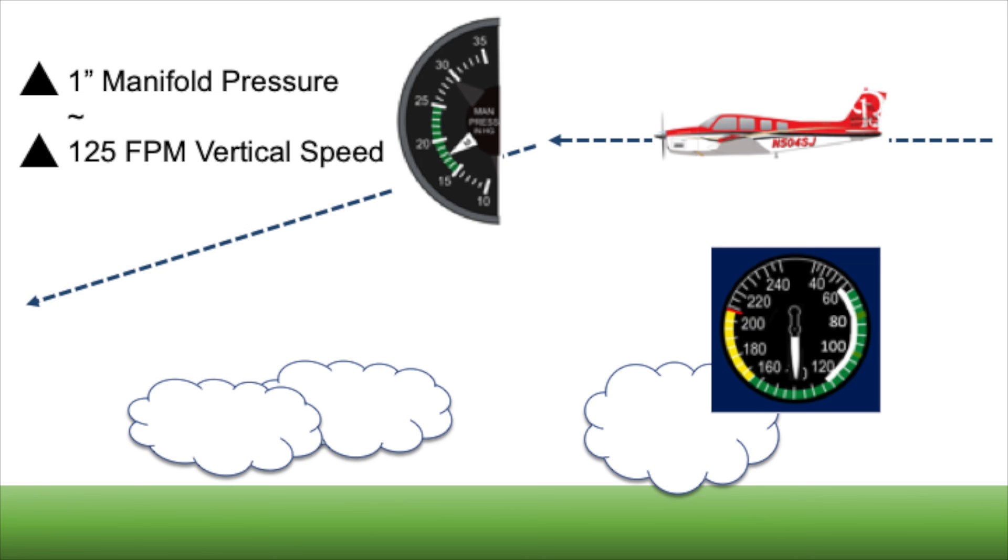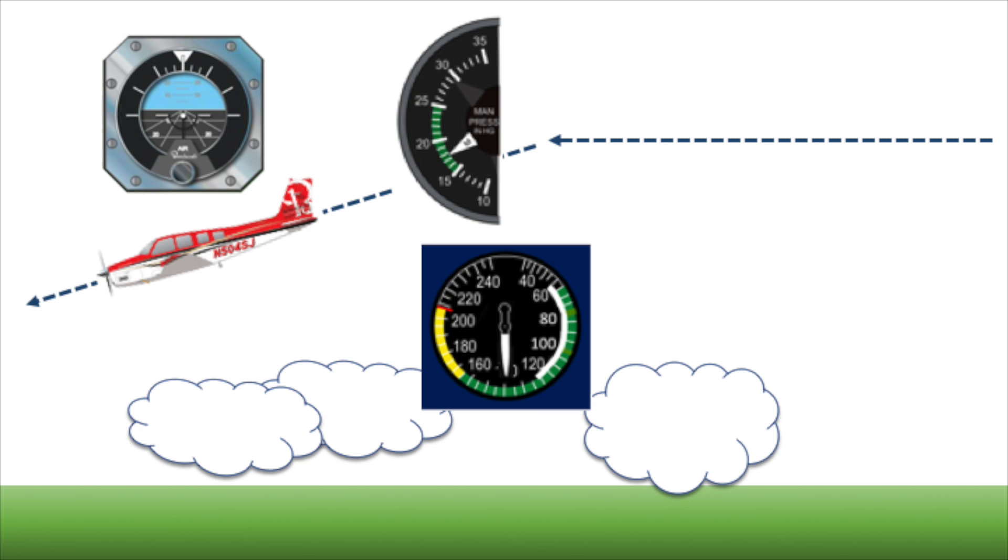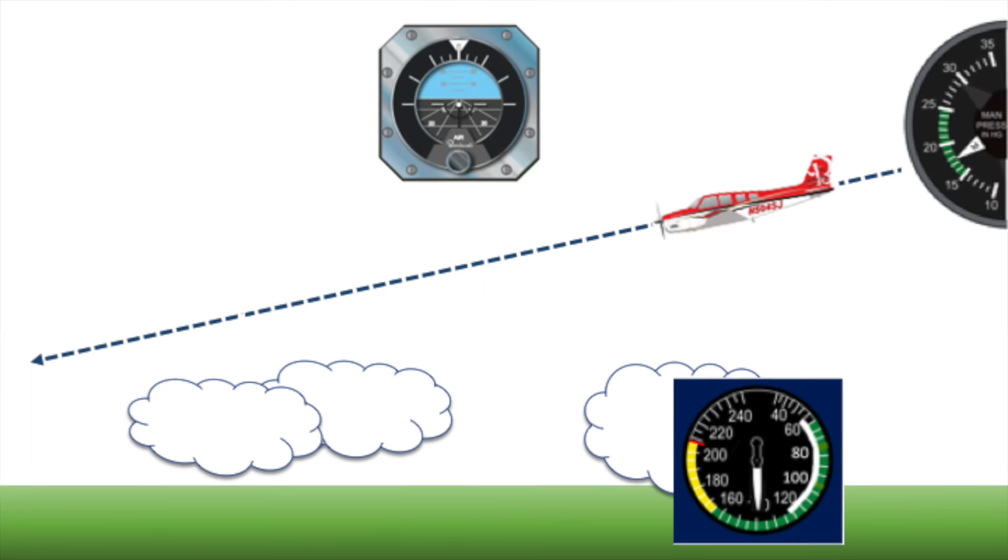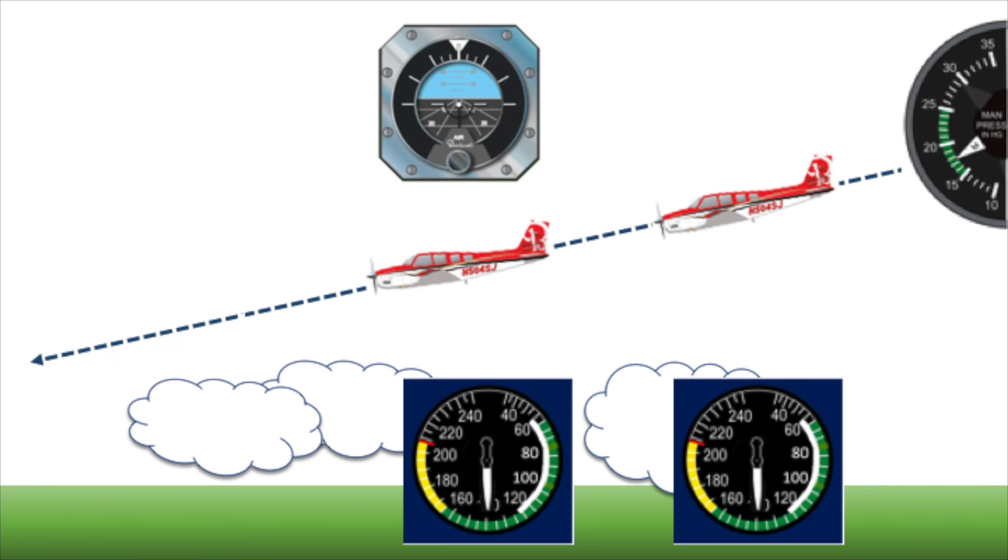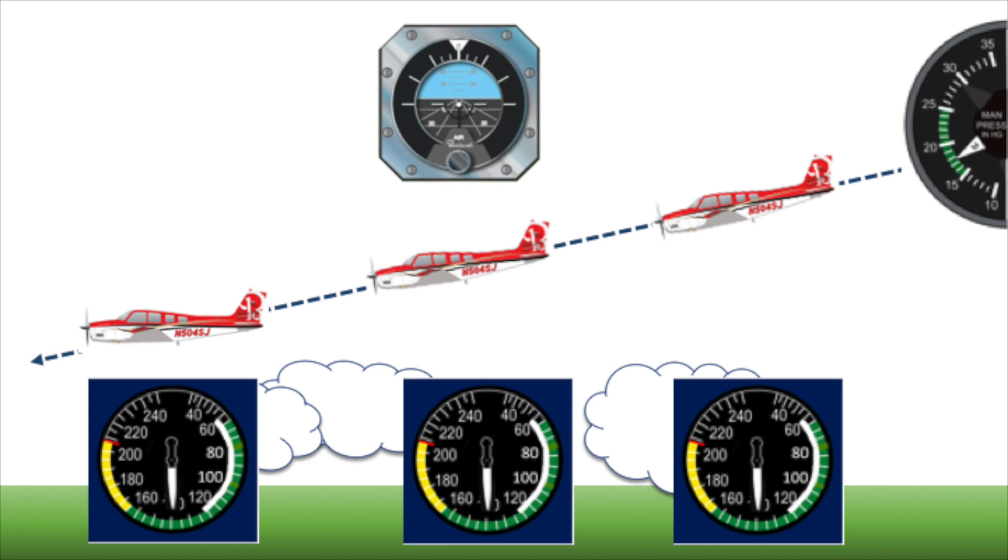When it's time to descend, reduce manifold pressure by 4 inches, and the airplane settles into a roughly 500 foot per minute descent at the same indicated airspeed you had in cruise, with little to no change at all in elevator trim. In a normally aspirated airplane, the manifold pressure increases at the rate of about 1 inch for every thousand feet of descent. To maintain a constant airspeed and rate of descent without having to adjust the trim, adjust the throttle slightly every 500 feet or so to maintain the same manifold pressure you used to begin your descent.